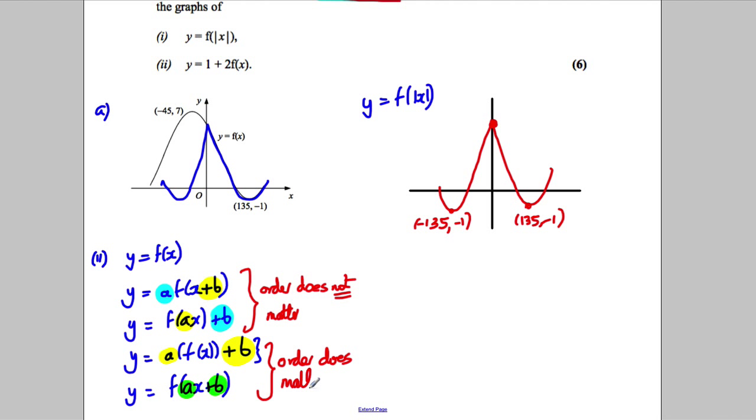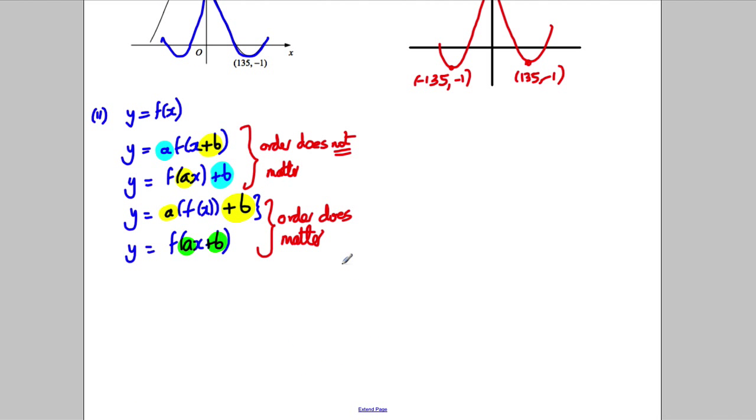So when they're both in or both out, order matters. When one's in and one's out, order doesn't matter. The way I remember it, an easy way for the exam: if they're both in, I think 'b first.' Both in, b first. Both out, I remember a first. So both in, b first—in this case they're both in, so b first then a. And in this case they're both out, so a first then b.